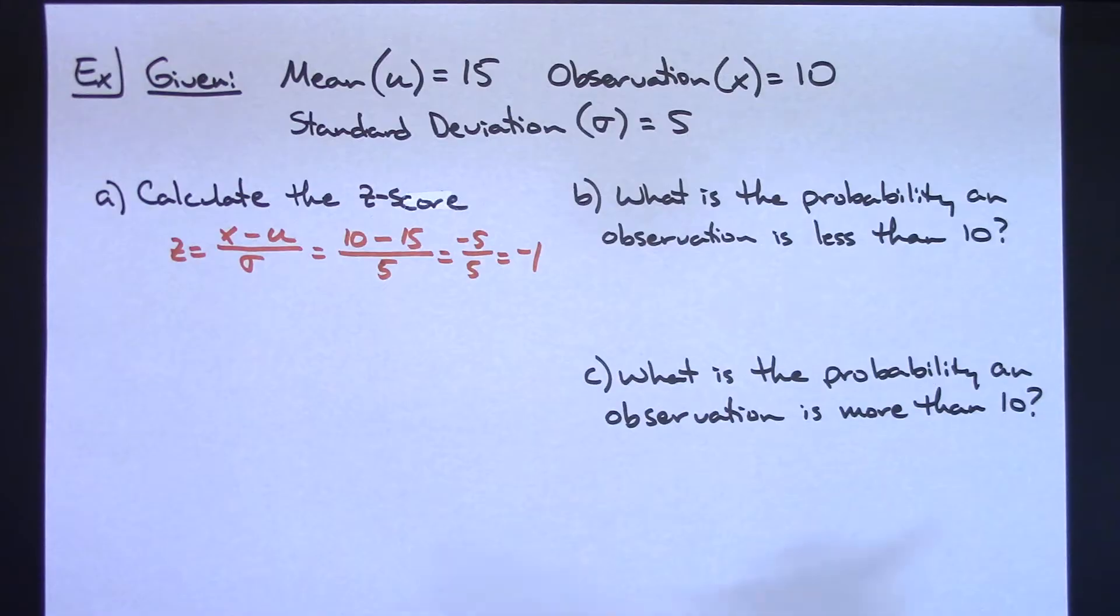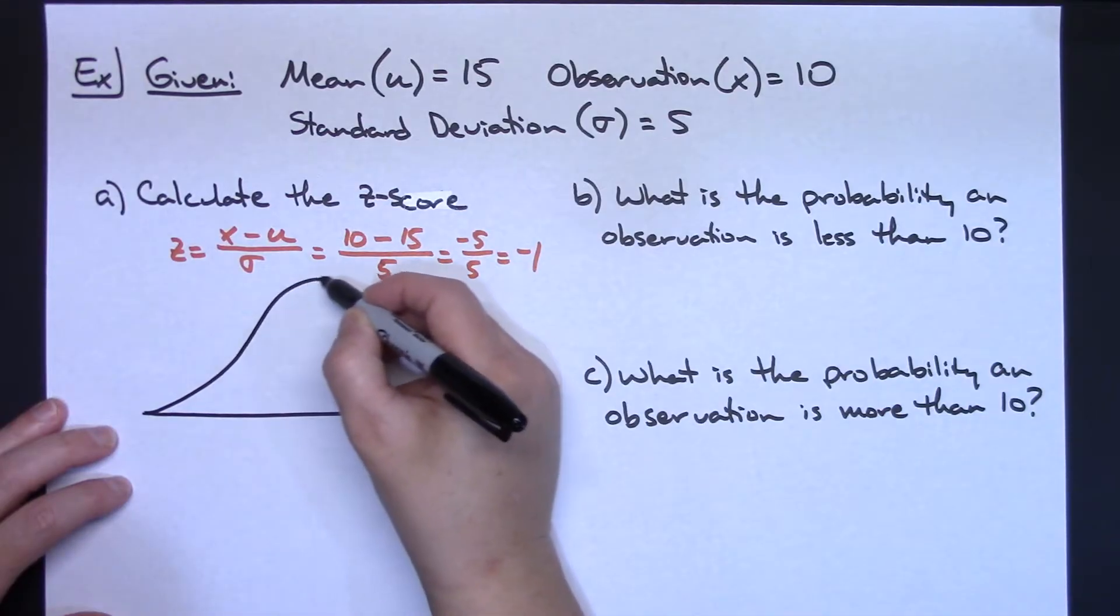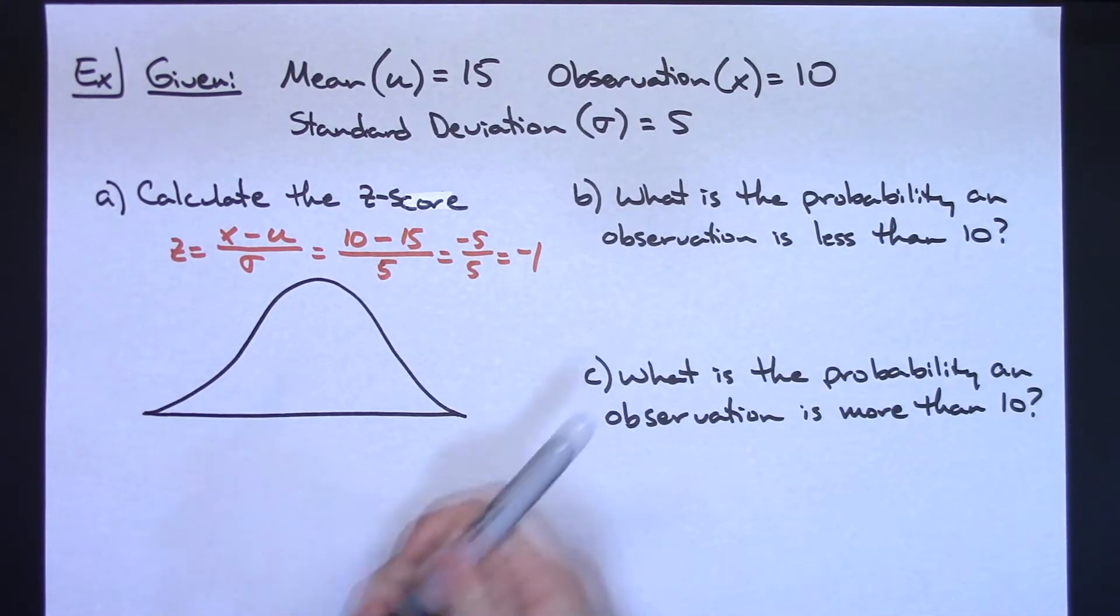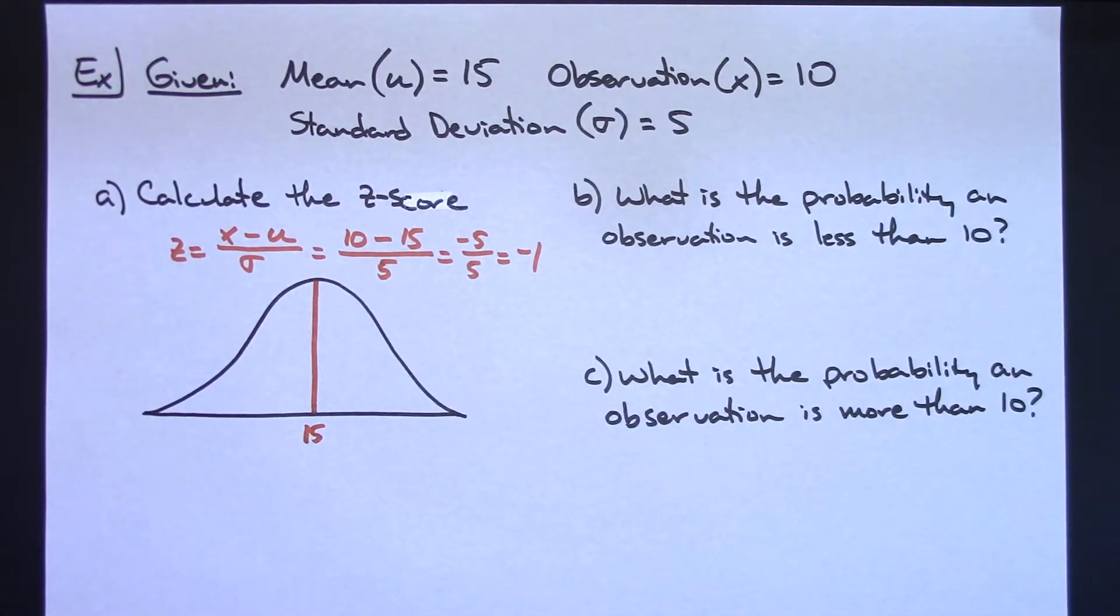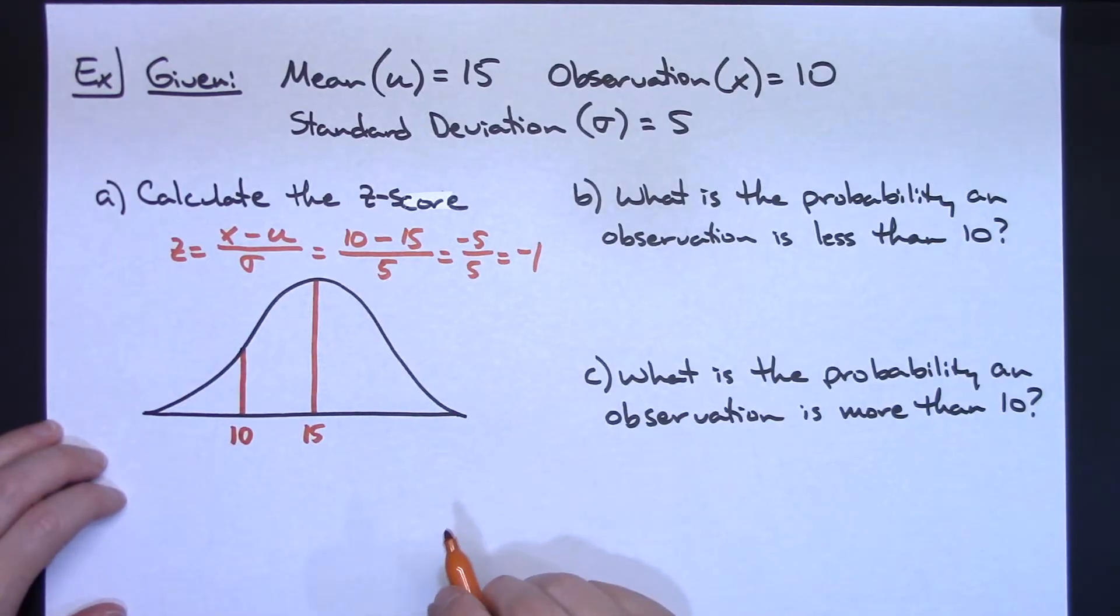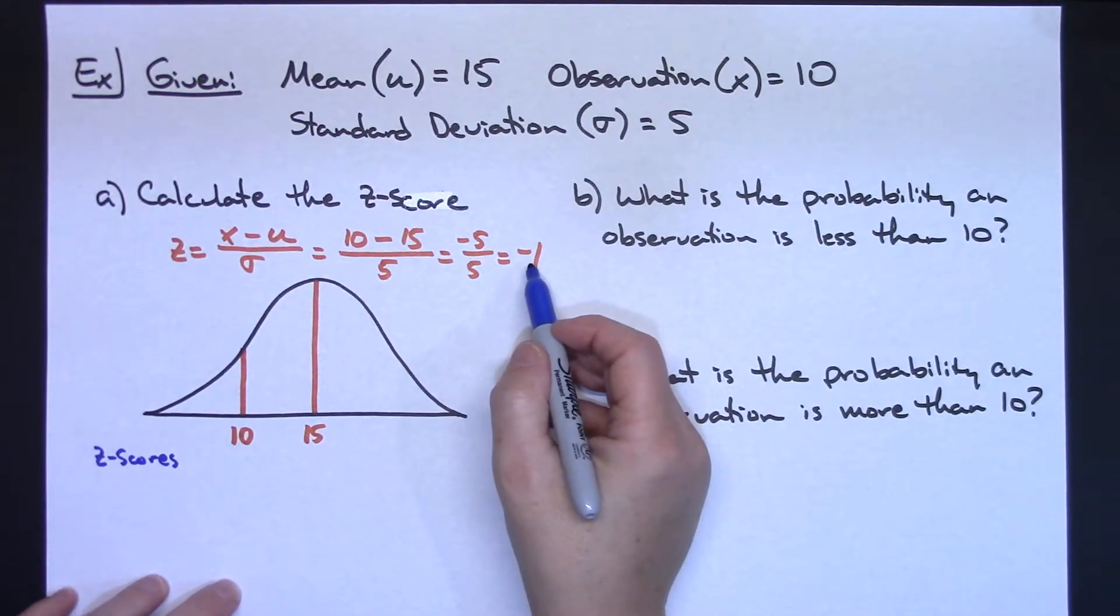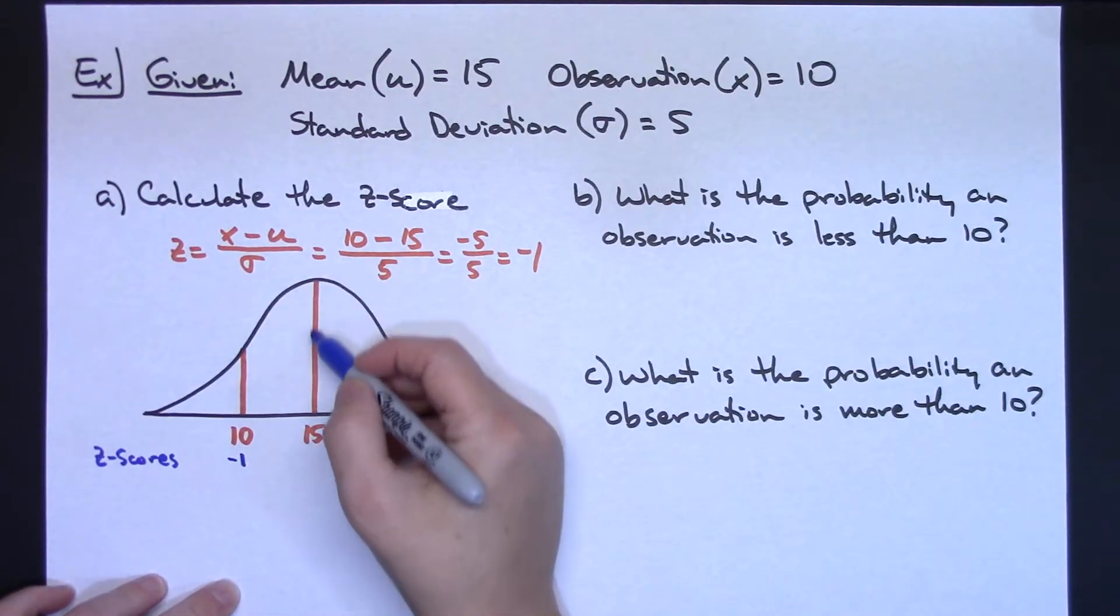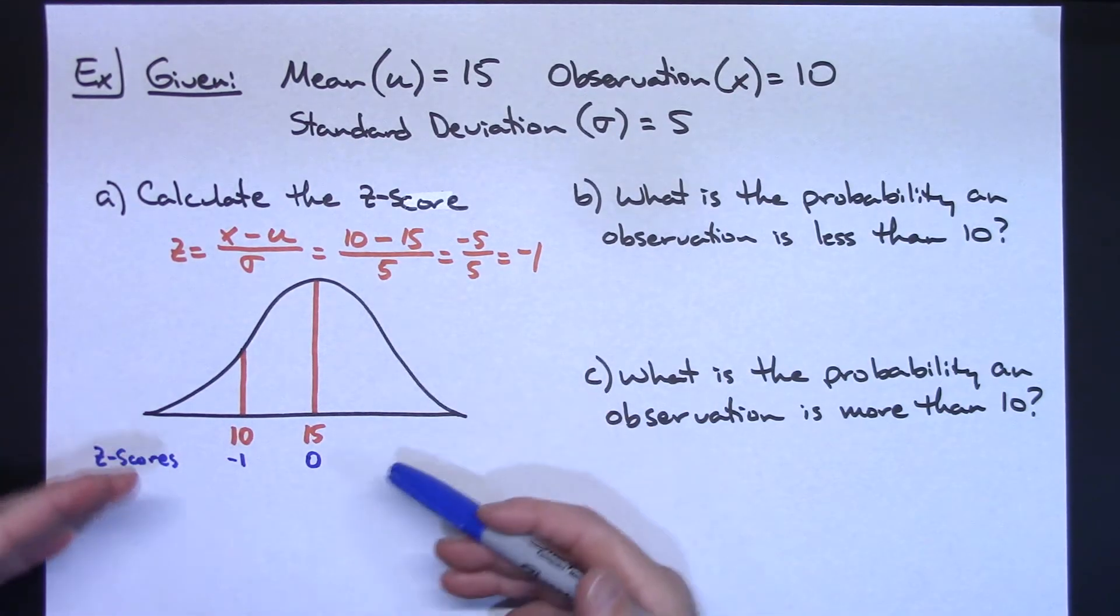Now at this point, I would probably go back to my bell-shaped curve and draw a picture so that I can visualize and see what's going on. So let's do a bell-shaped curve here. Now we said in our example that our mean is 15, so let's put our mean on at 15. Our observation is 10, so our 10 is going to be just over here, rough estimate. Our 10 is going to be there. Now, I would also put on our z-scores. Our z-scores, we calculated a z-score of negative 1 at our observation of 10. We know that at the mean, our z-score is always 0.